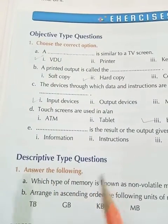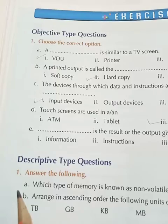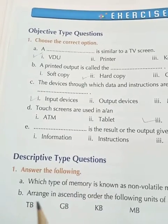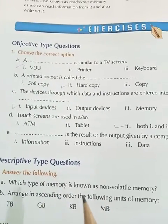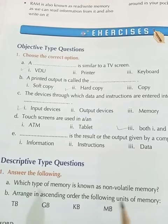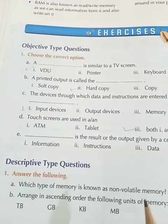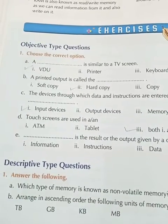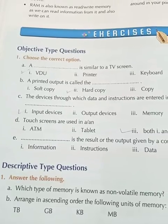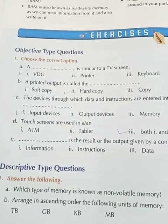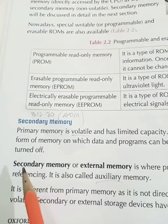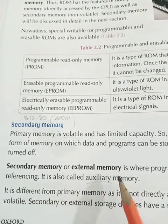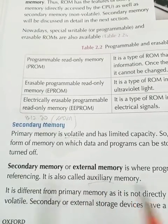Now we come to descriptive type questions, number one: answer the following. Part A — which type of memory is known as non-volatile memory? Non-volatile means which is not removed, which is permanent. The answer is secondary memory, or external memory.